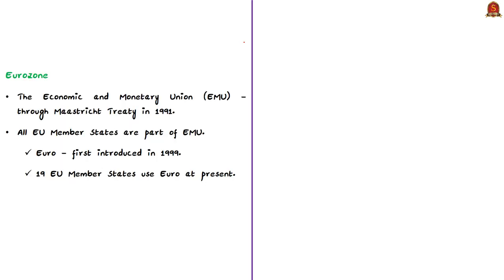An Economic and Monetary Union (EMU) was a recurring ambition for the European Union from the late 1960s. This union involves coordinating economic and fiscal policies, having a common monetary policy, and a common currency known as the euro. The foundation to form the EMU was taken by the European Council in 1991 through the Treaty on Economic Union, also known as the Maastricht Treaty.